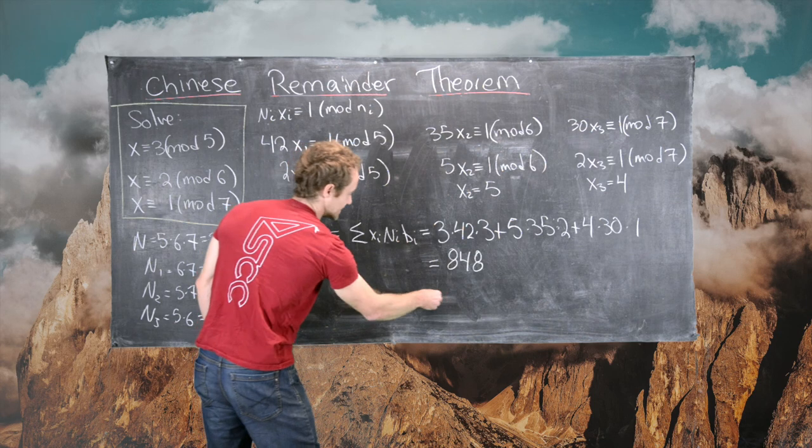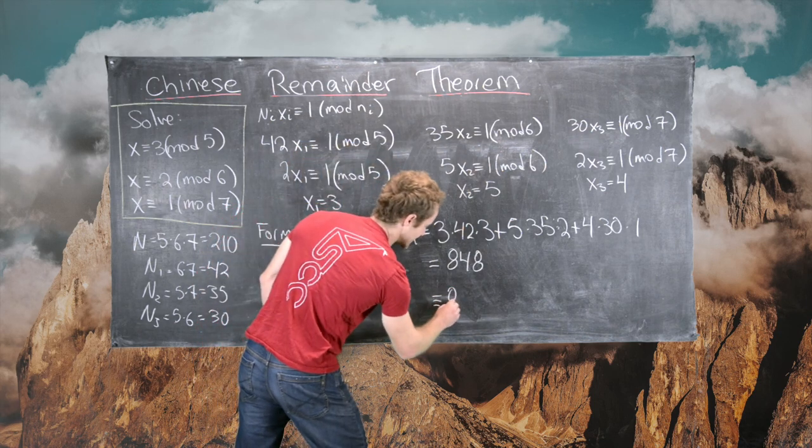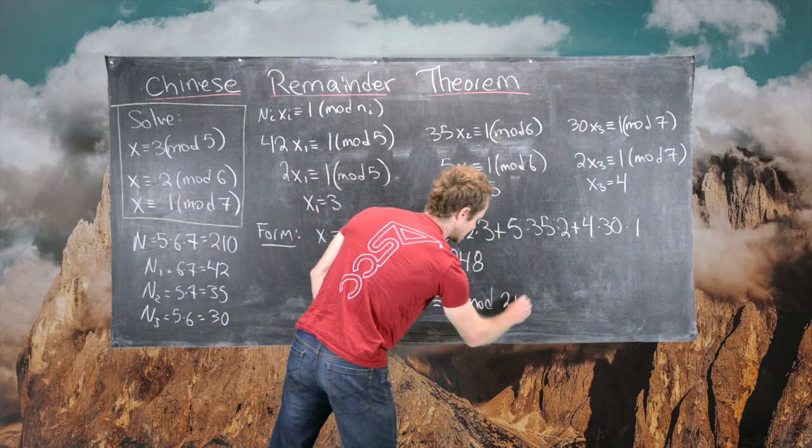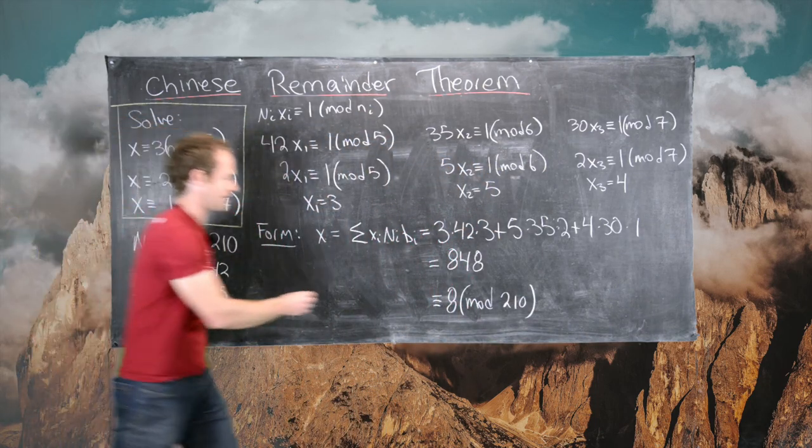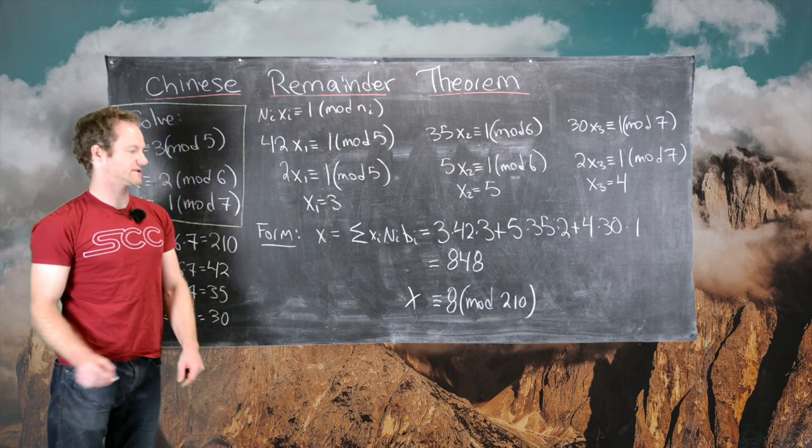So that means we'll reduce 848 modulo 210, and we'll notice that this is congruent to 8 mod 210. And that's our final answer, so we have X is congruent to 8 mod 210.